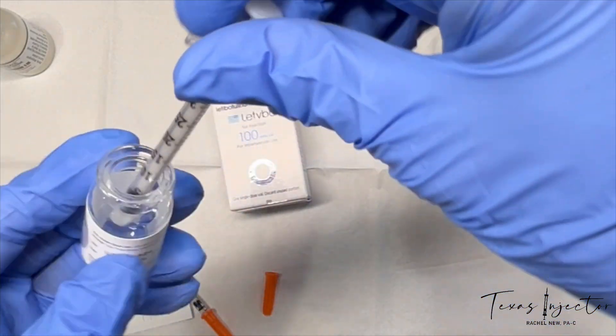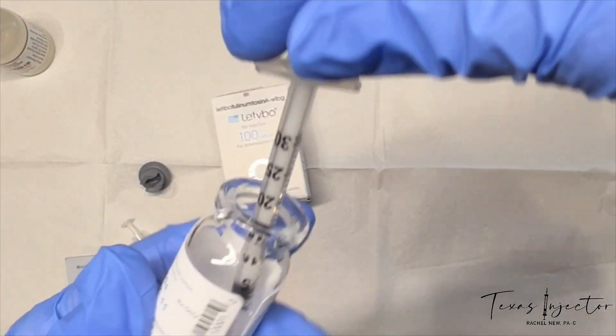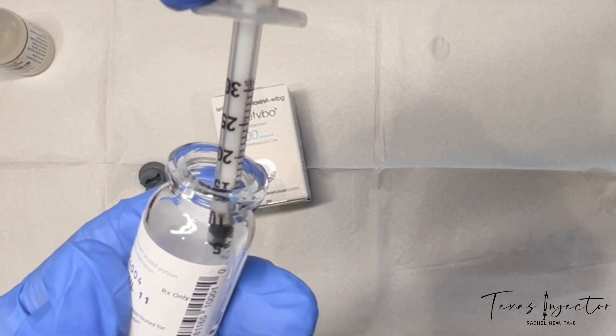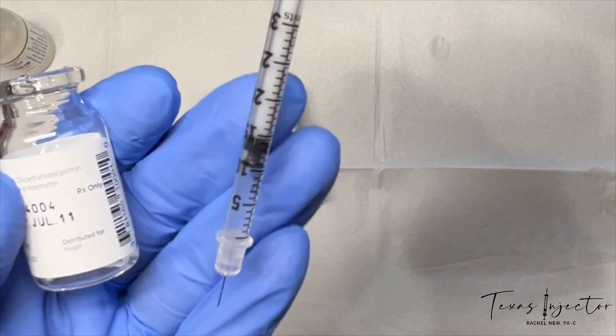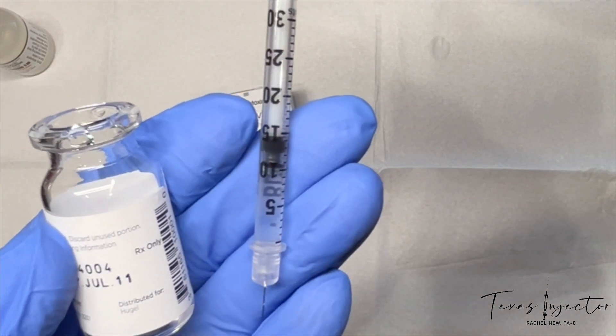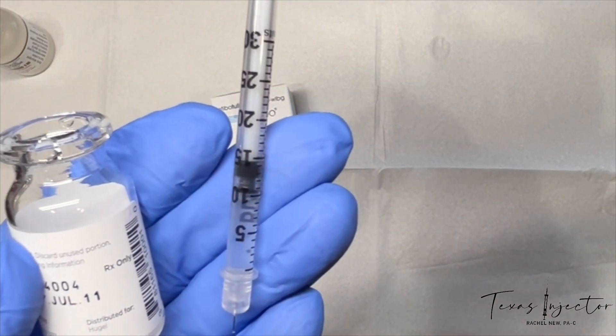With Latibo, every 0.1 or the 10 on the insulin syringe is going to be 4 Latibo units. So the 10 is 4 Latibo units.